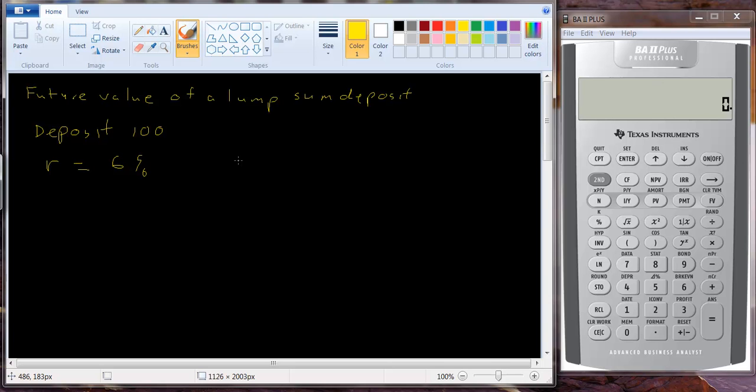Now remember in a previous tutorial I talked about simple versus compound interest. In the case of simple interest you only receive interest on the principal, so on the original hundred. In this case if it were simple interest you'd only receive six dollars in interest each year. It would never go up.